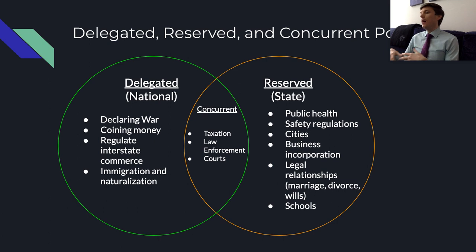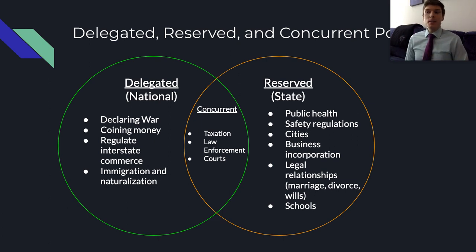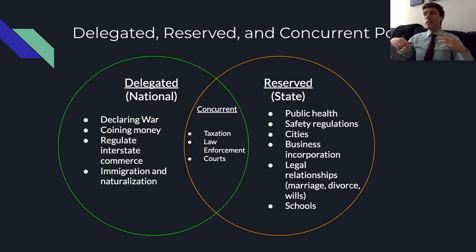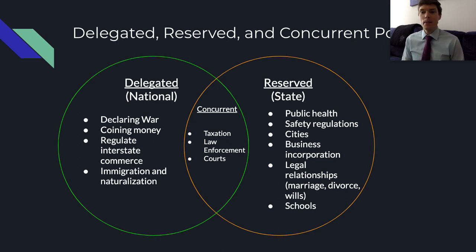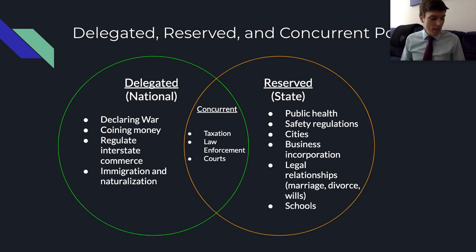Reserved powers belong to the states — public health is a very important example right now with COVID-19. But this is where those lines get blurred, because when you have something with the scope of a global pandemic, it's difficult to leave that issue entirely to the states. It will have to involve some federal action, given how easy it is to cross state lines and the need for consistency.